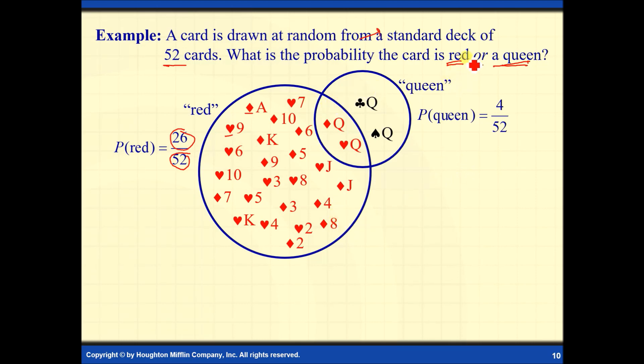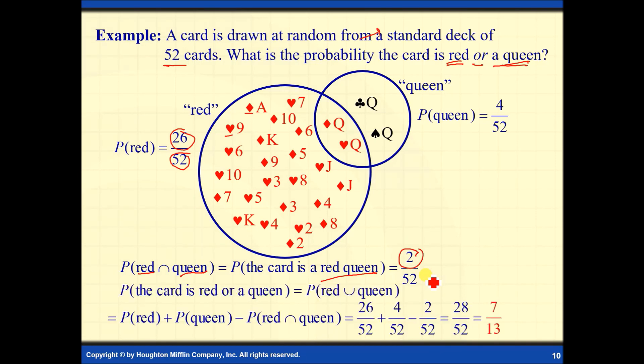kapag kinukuha natin yung probability or union of two events, kailangan natin isubtract yung common na dun sa dalawang events natin, which are the queen of diamonds at saka yung queen of hearts natin. Sila yung dalawa na common dun sa dalawang events na red cards at saka queen cards natin. In short, merong dalawang nag-exist, which are the red queen kung tawagin. Therefore, to simplify the final answer, it is given by the probability of red plus probability of queen minus the probability of red and queen. Magkakaroon tayo ng 26 over 52 plus 4 over 52 minus 2 over 52 is equal to 28 over 52, or that simplifies to 7 over 13.